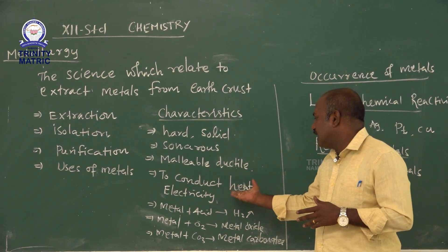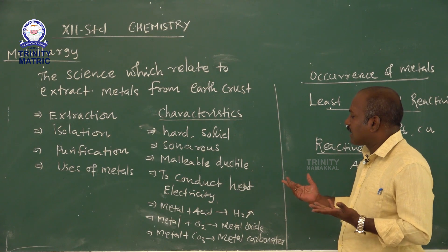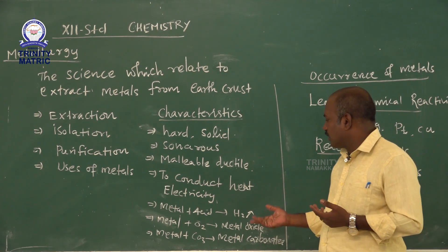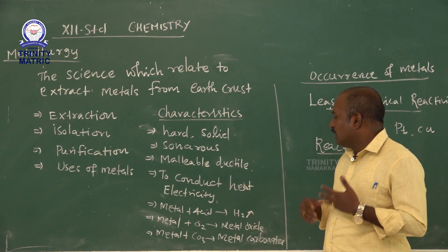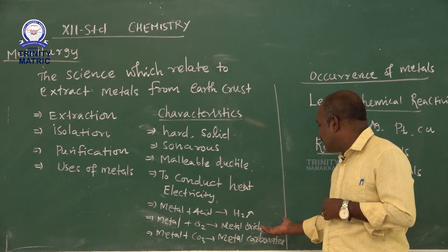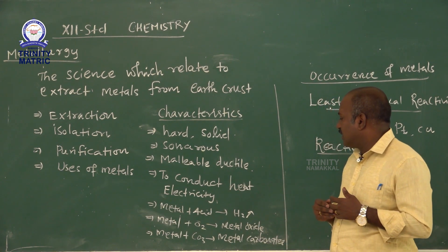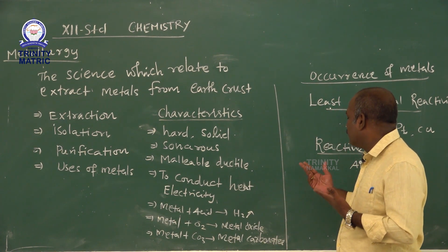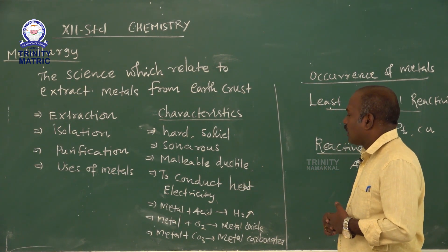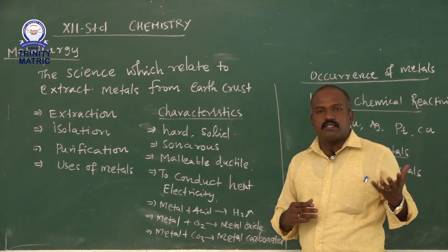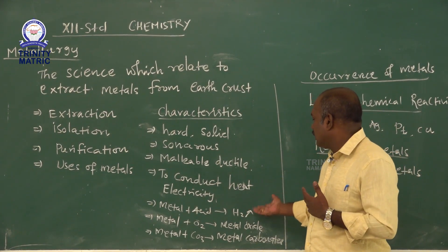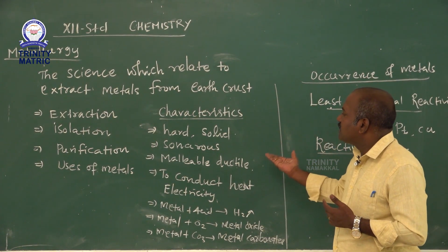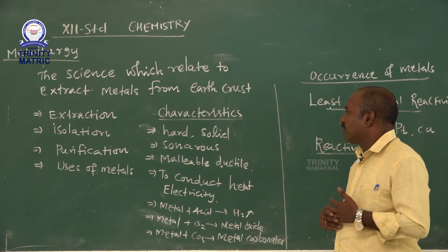In metallurgy, metal reacts with acid and gives hydrogen gas; metal reacts with oxygen and gives metal oxide; metals react with carbonate and give metal carbonate. So any metal treated with acid will give hydrogen gas. These are the basic characteristics of metals.